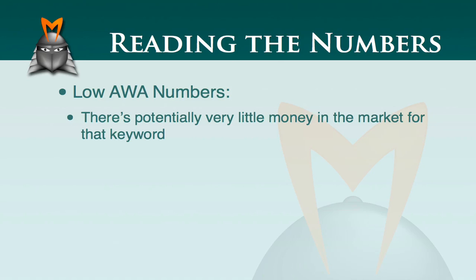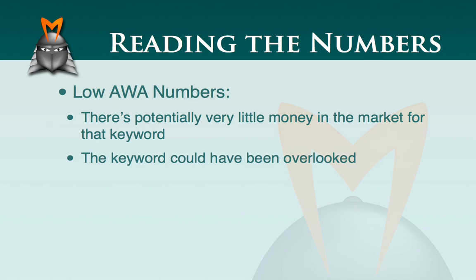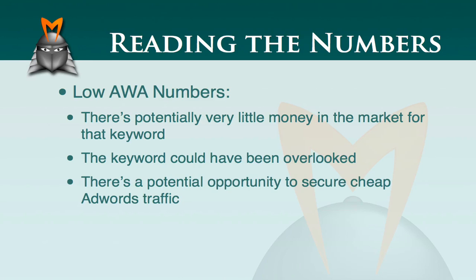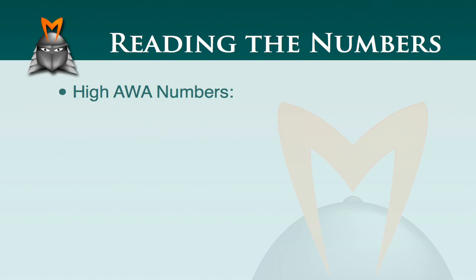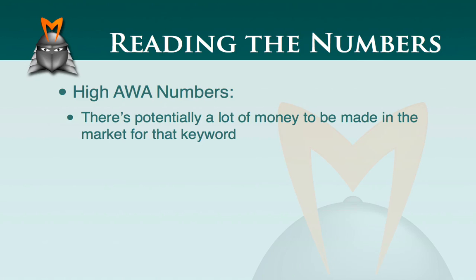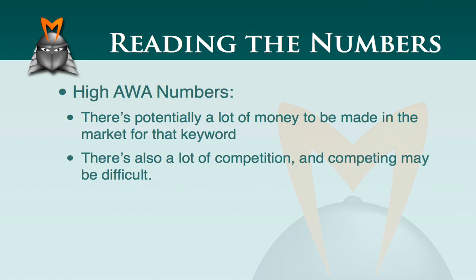If the numbers are low, this potentially means there's very little money in the market for that specific keyword. However, it can also mean the keyword has just been overlooked — that current advertisers haven't seen its value yet. If that's the case, there's potential opportunity for you to secure very cheap AdWords traffic. On the flip side, if the numbers are high, there's potentially a lot of money to be made, but also a lot of competition, which could make it very difficult to rank on the first couple of pages and can be quite costly.